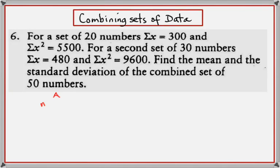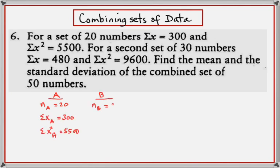Combining sets of data: for example, a set of 20 numbers has Σx = 300, Σx² = 5500; a second set of 30 numbers has its own Σx and Σx². Find the mean and SD of the combined set of 50 numbers. Many people ask: can we average the means of both groups, and do the same for standard deviation? The answer is a simple no — the weightings are not equal, so instead we add Σx of the first group to Σx of the second group.